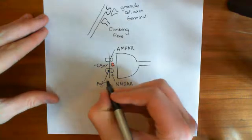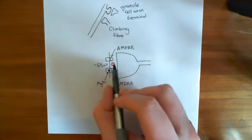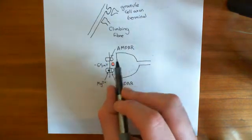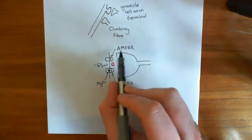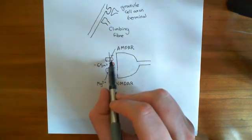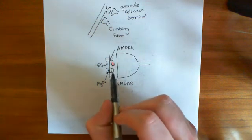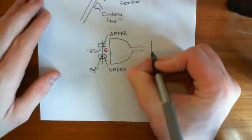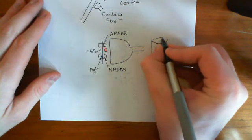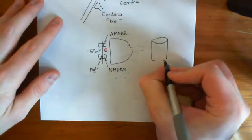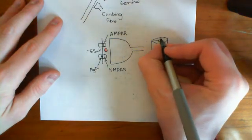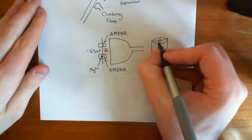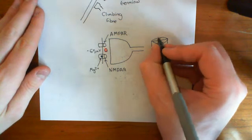When the climbing fibre axon terminal releases glutamate onto the membrane of the Purkinje cell dendrite, four glutamate molecules bind to the AMPA receptor — one to each of the four subunits — and two glutamates bind to the NMDA receptor. The AMPA receptor is made up of four subunits forming the pore, and all four subunits have ligand binding domains for glutamate, so glutamate needs to bind to all four to fully open the AMPA receptor.